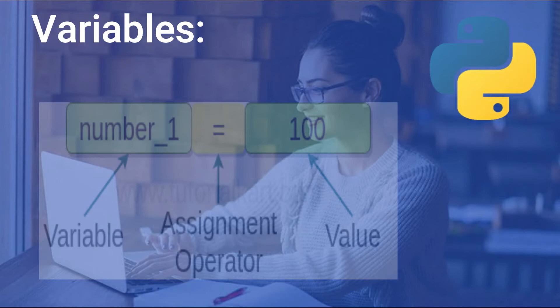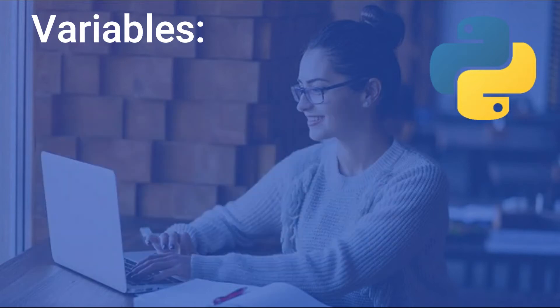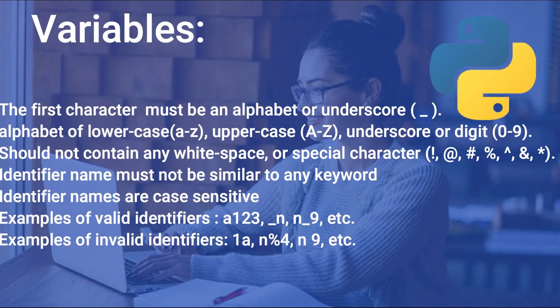The naming of variables: first we start with alphabets or underscore. Alphabets can be A to Z uppercase or lowercase. We cannot use white space, special characters, or keywords as variable names.